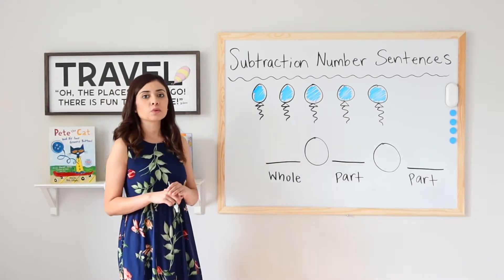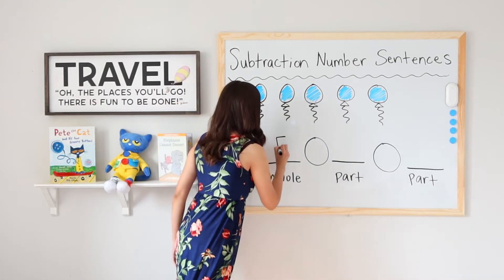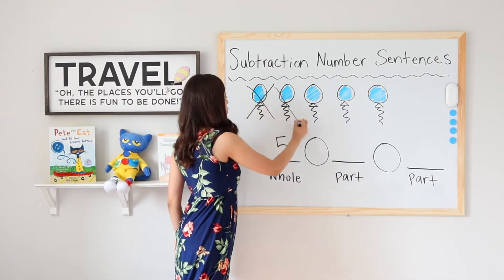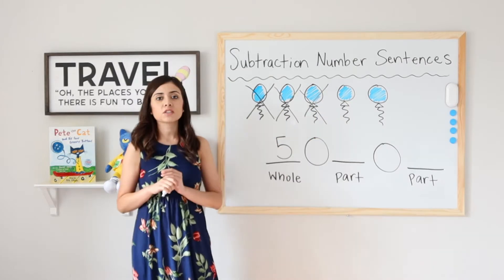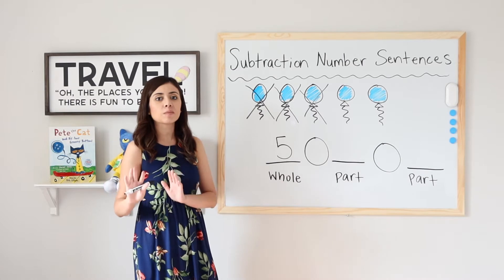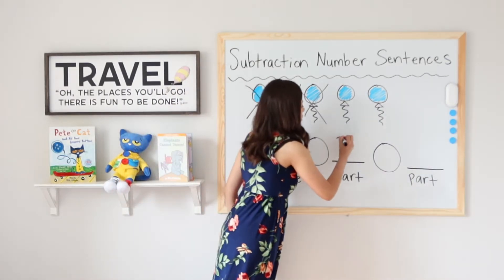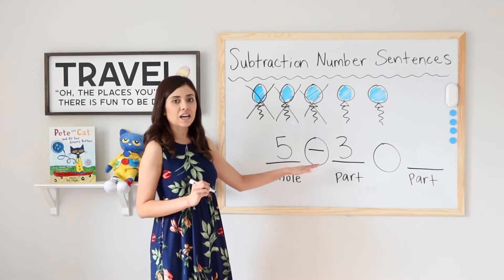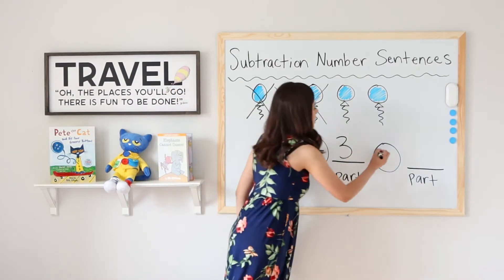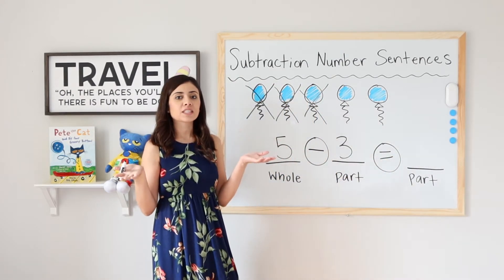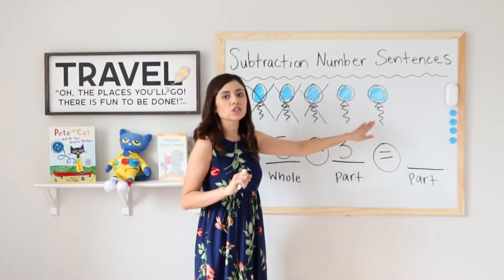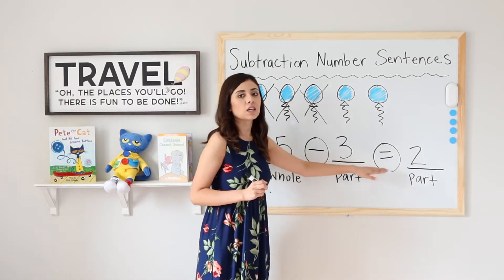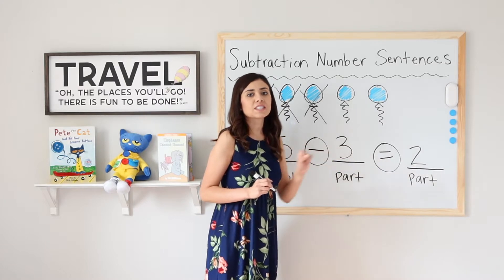I have 5 blue balloons. That is my whole. So I'm going to write down 5. 3 balloons pop. 1, 2, 3. So now I'm going to take those 3 away. I do not have those 3 balloons anymore because they popped. So let's write 3 down. And we know that we're taking them away, so we are going to use our minus sign. 5 minus 3 equals how many balloons do I have left? Let's go ahead and count. 1, 2. I have 2 balloons. So 5 minus 3 equals 2. 2 is the difference. It is the answer.